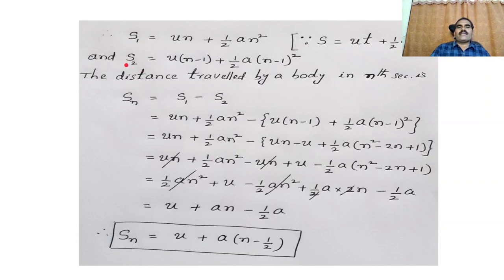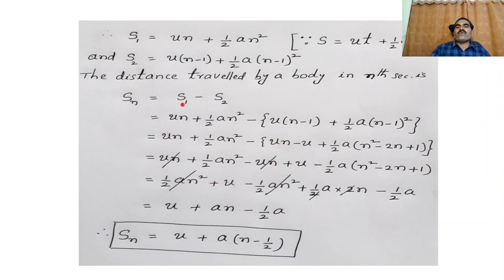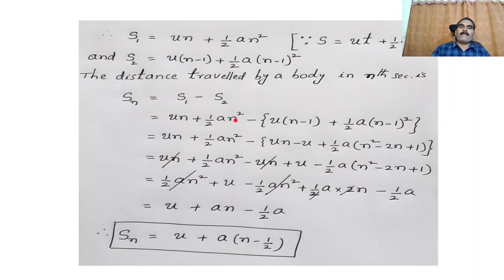S1 is the distance in N seconds, S2 is the distance in N minus 1 seconds. The distance travelled in the Nth second, denoted SN, equals S1 minus S2. SN equals UN plus half AN square minus U times (N minus 1) minus half A times (N minus 1) whole square.